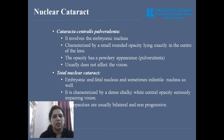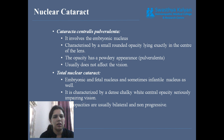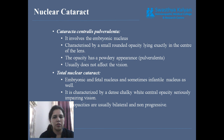Nuclear cataract is divided into two parts. First, cataracta centralis pulverulenta is an embryonic cataract that develops from the embryonic nucleus. The opacity is very small since only the embryonic lens is involved, and it is powdery in appearance — hence pulverulenta. It usually does not affect vision because only a very small part of the embryonic nucleus is affected. Second, total nuclear cataract means all types of nuclear lens — embryonic, fetal, and infantile — are involved. The opacity is very large, seriously impairing vision. It is usually bilateral and non-progressive.